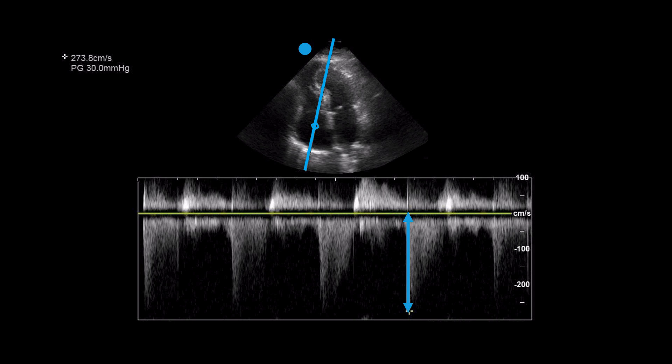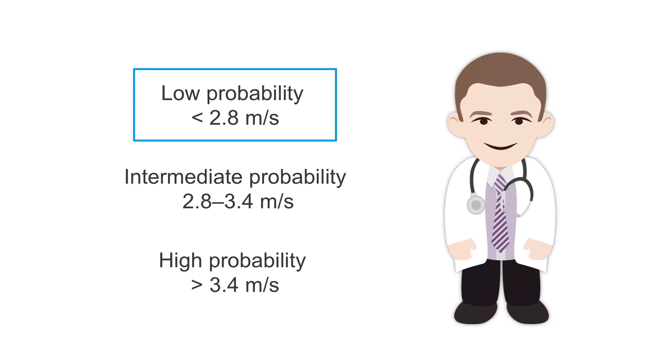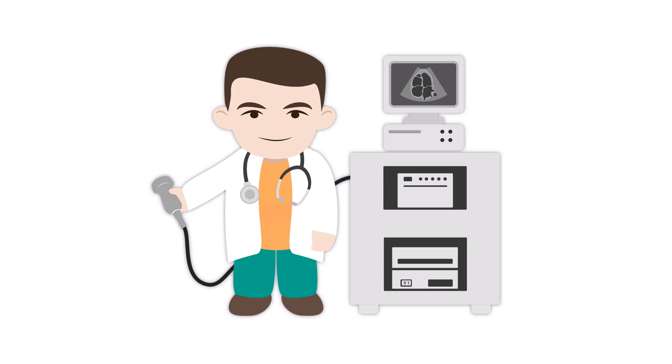Here's the continuous wave Doppler tracing of another patient. The calculated velocity of the jet here is 273.8 centimeters per second or 2.7 meters per second. This places the patient in the low probability range. Now we know two different ways to calculate pulmonary artery systolic pressure.